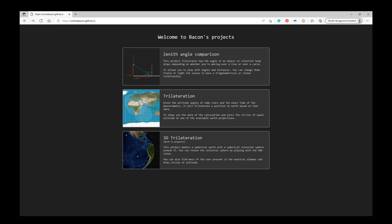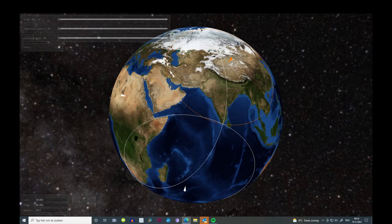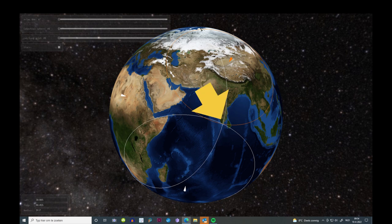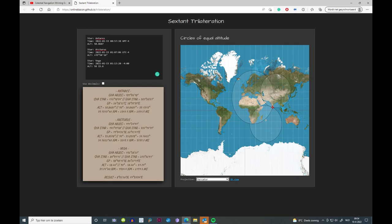This site draws for you the circles of equal altitude, and at the crossing of the three circles you find your current position. Notice that these circles of equal altitude are only circles when drawn on a globe. The moment they are drawn on a projection of a globe, be it the Mercator projection,